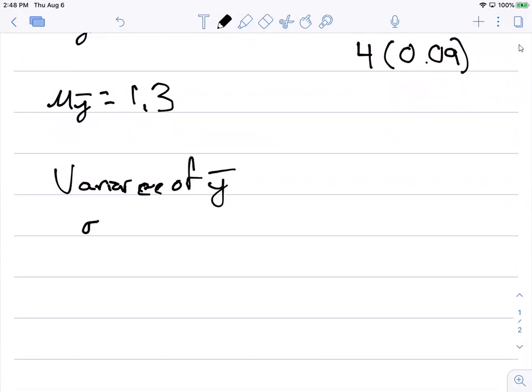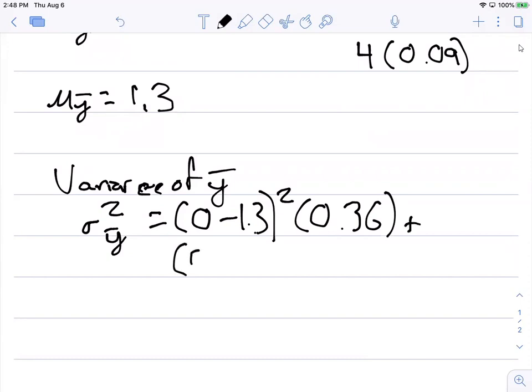So here we can denote this sigma squared sub y-bar. And that's going to be the same thing. Each of the values minus the mean, 1.3, squared, and then again multiplied by the probabilities, in this case 0.36, plus 0.5 minus 1.3 squared,